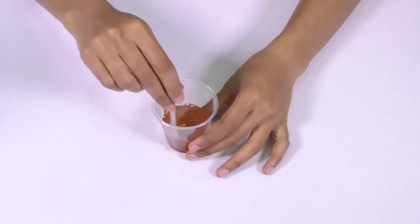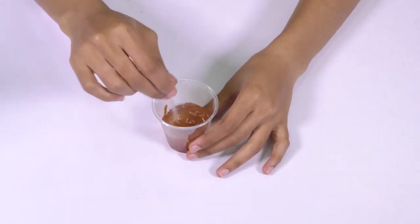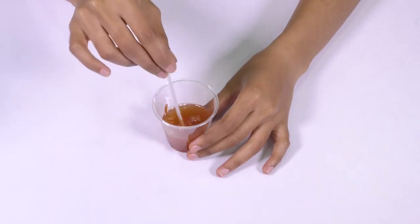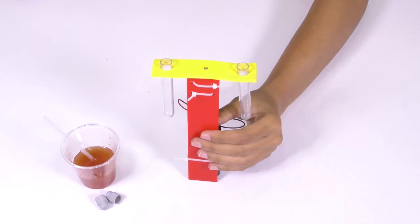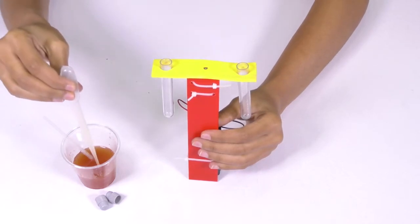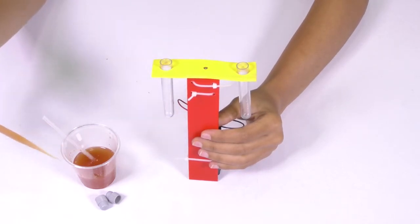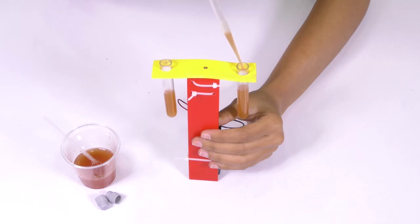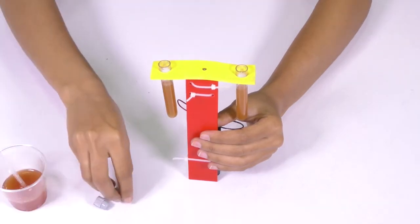Now, take the ketchup water mixture that you made earlier and stir the mixture again using a stirrer. Next, using a dropper, take 3 ml of the ketchup water mixture and fill about 3 fourths of each test tube with the mixture. After filling, close the tubes with their caps.